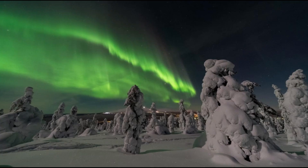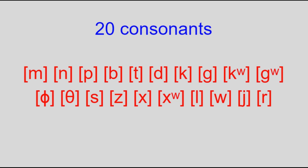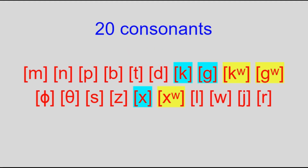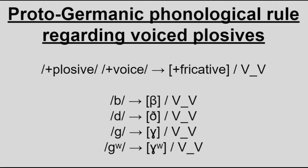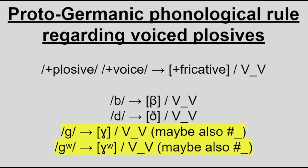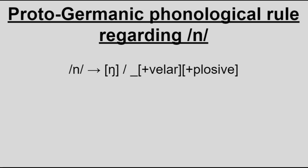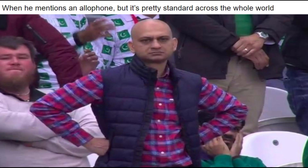Before getting into the sound shifts, here are the reconstructed parameters of Proto-Germanic, starting with consonants. Proto-Germanic had 20 phonemic consonants overall: two nasals (m, n), eight plosives (b, p, t, d, k, g, gʷ, kʷ), six fricatives (f, β, s, z, x, xʷ), three approximants (l, w, j), and a trill (r). The voiced plosives became voiced fricatives between vowels unless geminated. There is also speculation that xʷ was spirantized word-initially as well. Finally, n became ŋ before k and g, as is standard cross-linguistically.